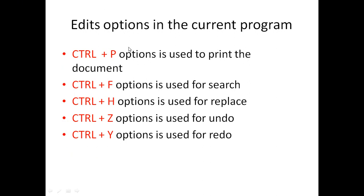Ctrl plus P is used to print the document. Ctrl plus F is used for search. Ctrl plus H is used for replace. Ctrl plus Z is used for undo, and Ctrl plus Y is used for redo. Redo means restart from the previous position, and undo means go back to a prior position.